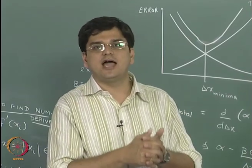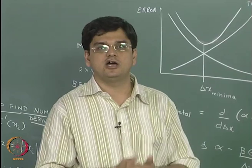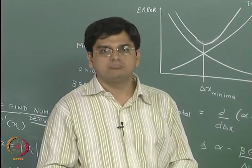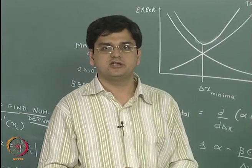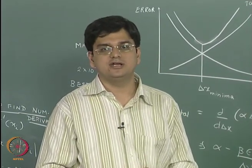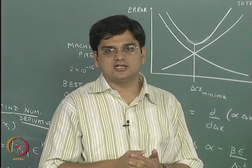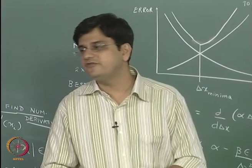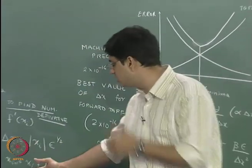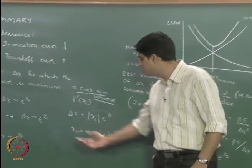Then we saw that as delta x is changed, round-off error changes. This is the total value of delta x at which the error is minimum and then we finally derived the condition for which delta x is minimum.